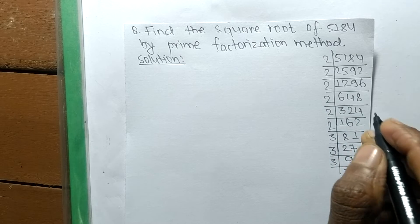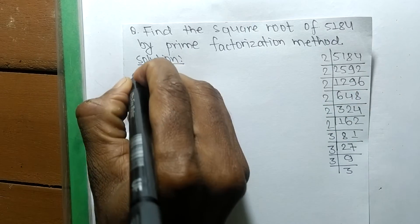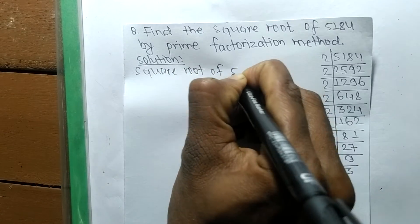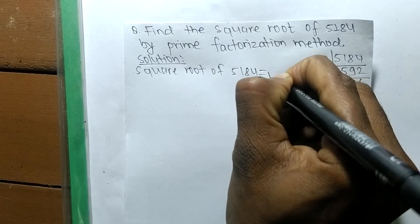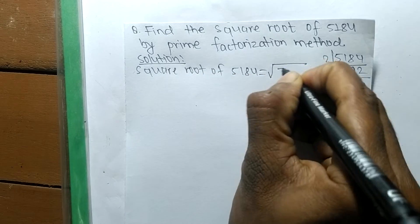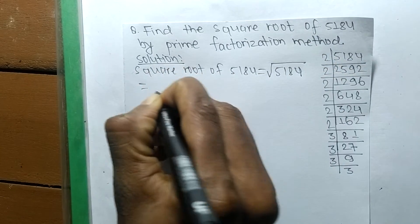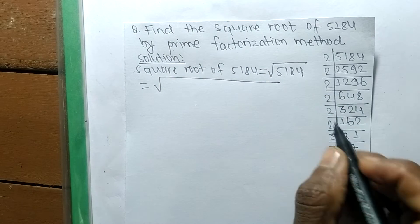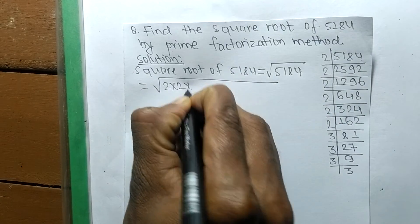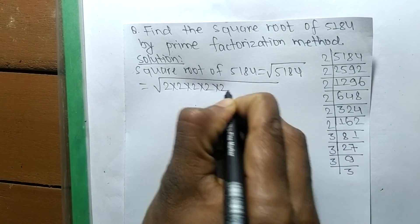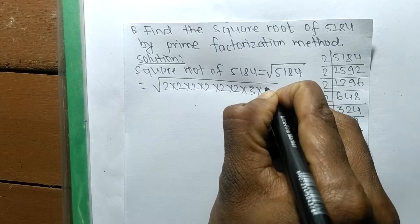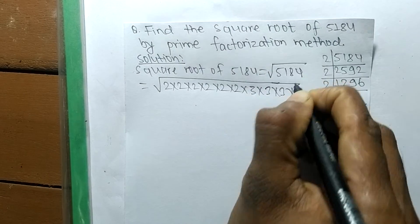So now we have to find the square root. The square root of 5184 is equal to — this is the sign of the square root, and we are finding the square root of 5184. Now we write its prime factors: 2 multiplied 6 times, and 3 multiplied 4 times.